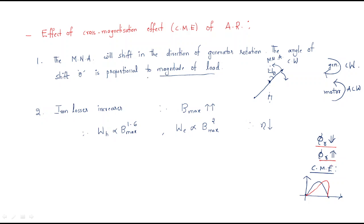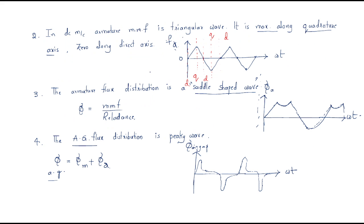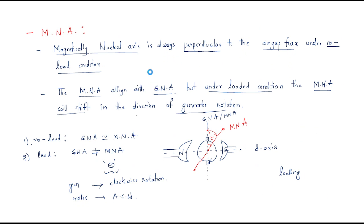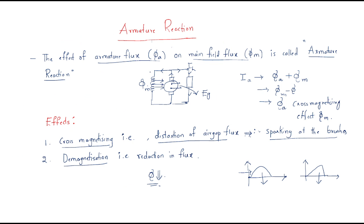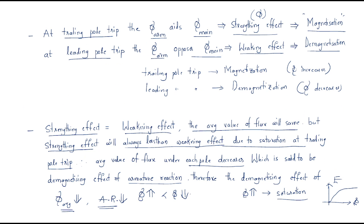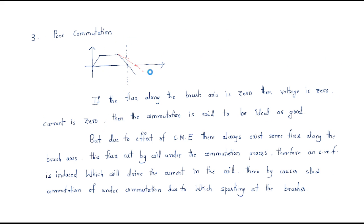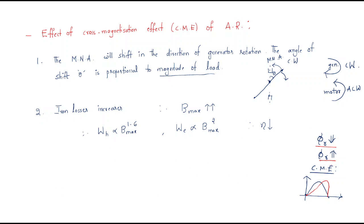Cross magnetization effectively shifts the magneto-neutral axis. Another effect is that iron losses increase due to cross magnetization. Iron losses are also known as core losses. They increase because when the maximum flux density increases, iron losses automatically increase.